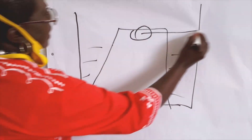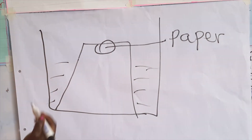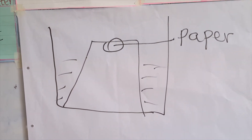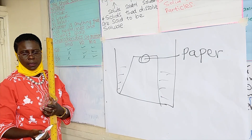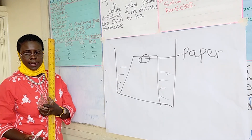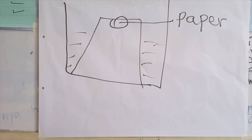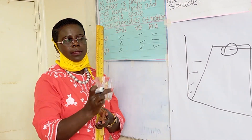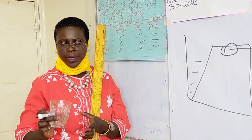We get exam questions like this. For example: five children took a glass and masked it in water, and they found that water did not enter their glass. Why? It is because air has already occupied space in their glass, and that is why water did not enter the glass.